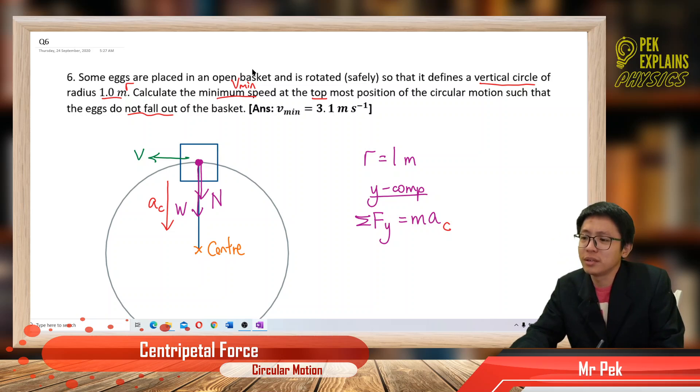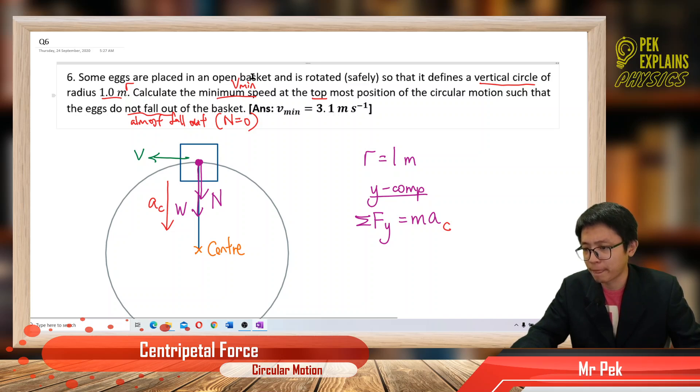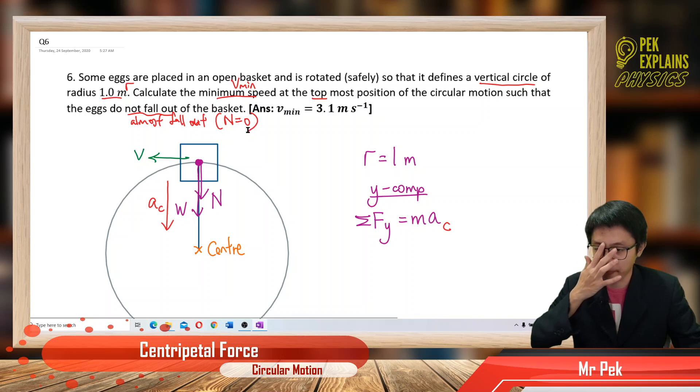At the top position so that it does not fall out from the basket. When the egg almost not fall out, actually it's almost fall out. Almost fall out means the normal force equal to zero. I will explain why. Lose contact from the surface. When it falls out means you lose contact from the basket, normal force is zero.